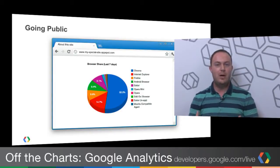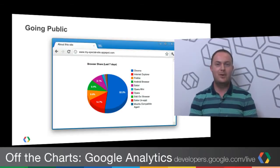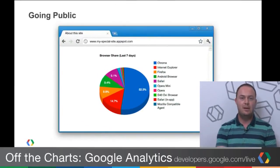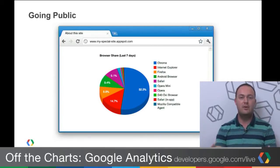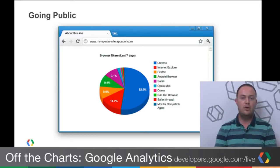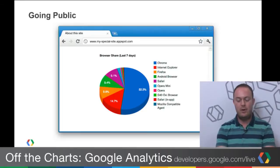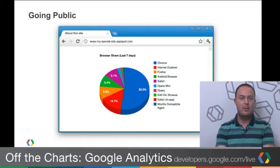When you think about making your data public, one use case is that people want to take some report from Google Analytics and make it publicly available, maybe on their website, or internally — like a dashboard you can share with everybody in your account without worrying about authentication and authorization. With Google Analytics, of course, you need an account and you need to authenticate. Maybe you want to show browser share for the last seven days, or demographics of your visitors, or create a page for advertisers. There are a lot of different use cases where this makes sense.